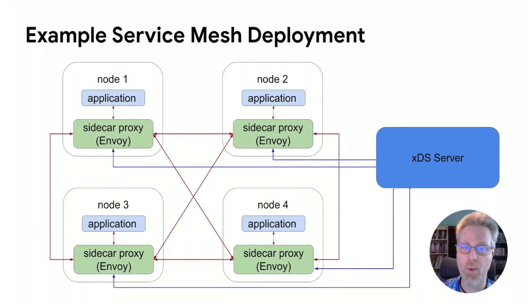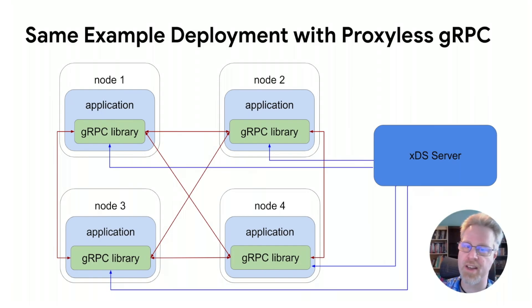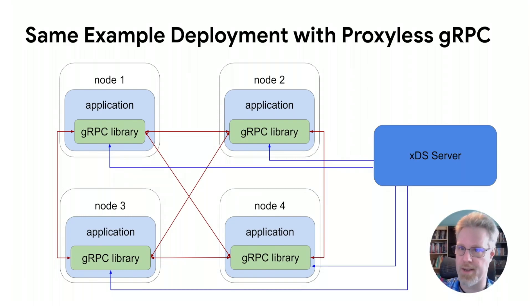This works really well, but there is one downside. Sidecar proxies are expensive — they add CPU and memory overhead, and they increase request latency. That overhead is why we added XDS support in gRPC. Here you can see the same service mesh deployment, but instead of having a sidecar proxy on each node, the application just links against gRPC. This provides the same scalability benefits of having a centralized control plane, but without the overhead of the sidecar proxy.